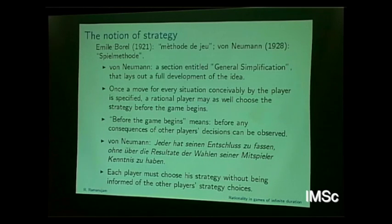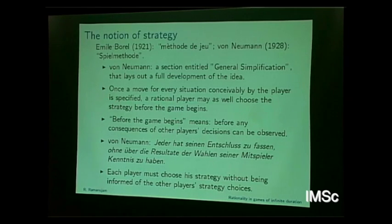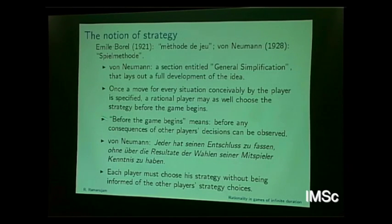The idea is that this is what is called normal form games. Once you have a space of strategies, don't worry about how the strategy is constructed in the tree. Whatever you are talking about in the strategy, it tells you what to do in all possible situations. If you know how a player is likely to play, you just look at a space of such strategies and choose one among them. A rational player may well choose a strategy.